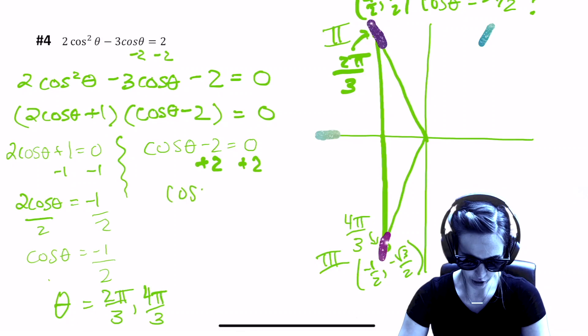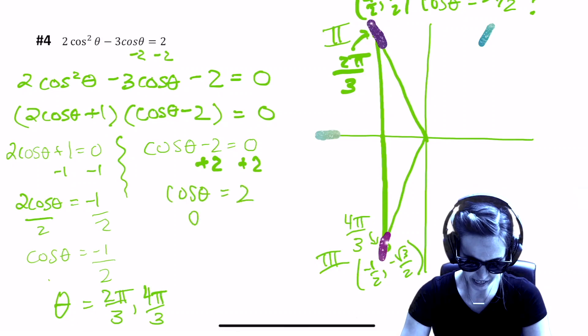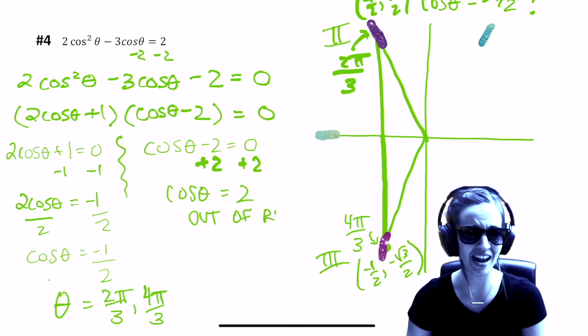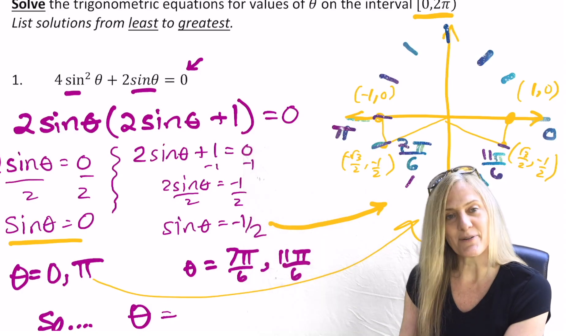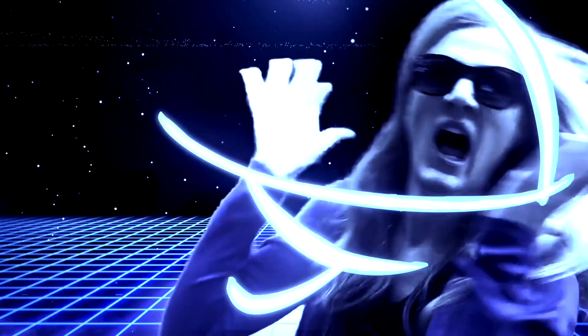Next we had a little invasion. We had to make sure we could solve the trig equation. Sector X — not the place to be.